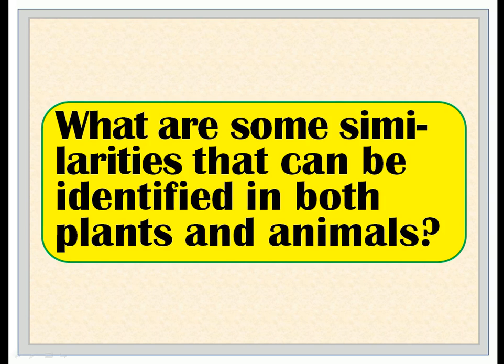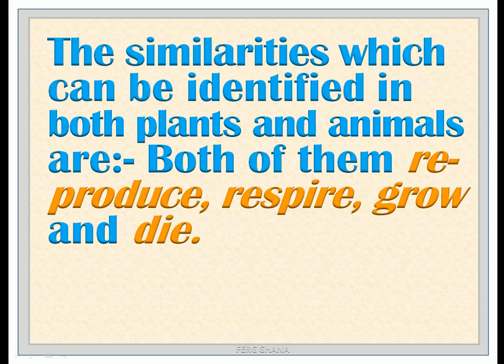What are some similarities that can be identified in both plants and animals? The similarities which can be identified in both plants and animals are: both of them reproduce, respire, grow, and die.